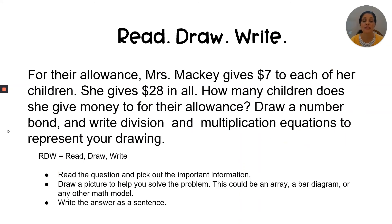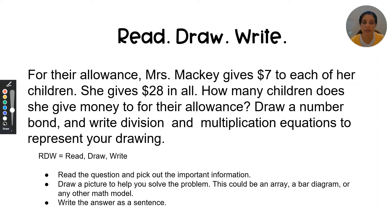Let's try this skill with a read, draw, write question — we'll do this one together. You'll need a piece of paper and a pencil, a dry erase board, or you can use a Google Jamboard. I will read the question aloud and we'll look for the most important information. Then we'll draw a picture to help solve the problem, and write an answer as a sentence. While I'm reading, I'm going to annotate or mark up the question, picking out the most important information.